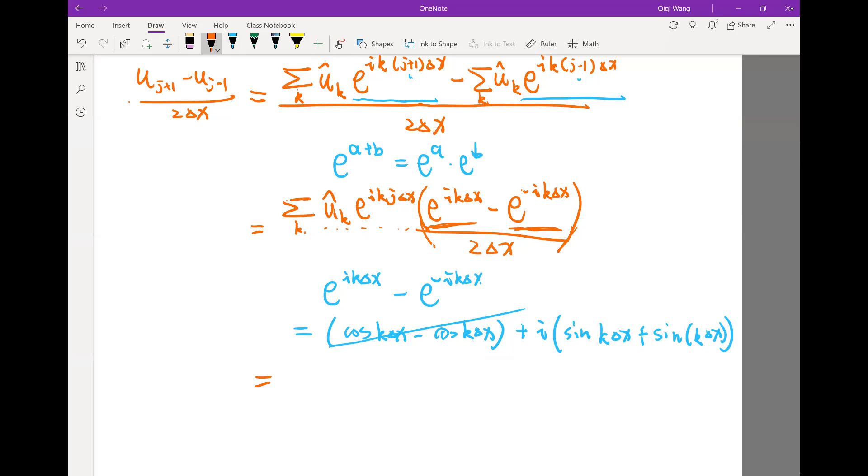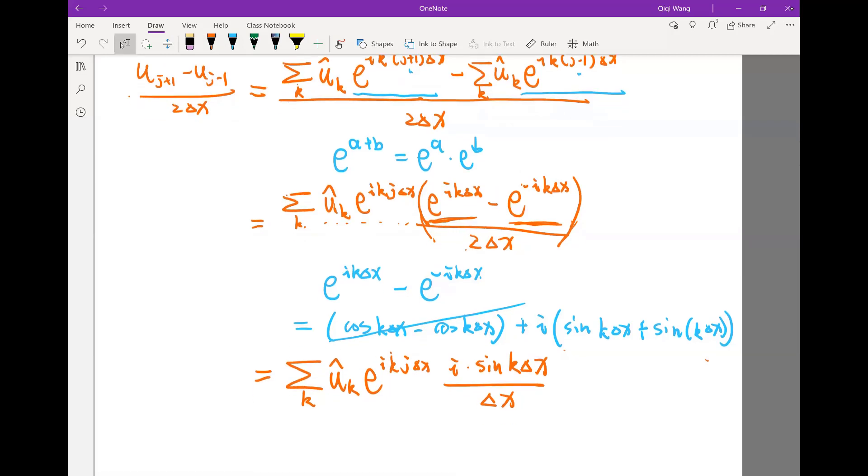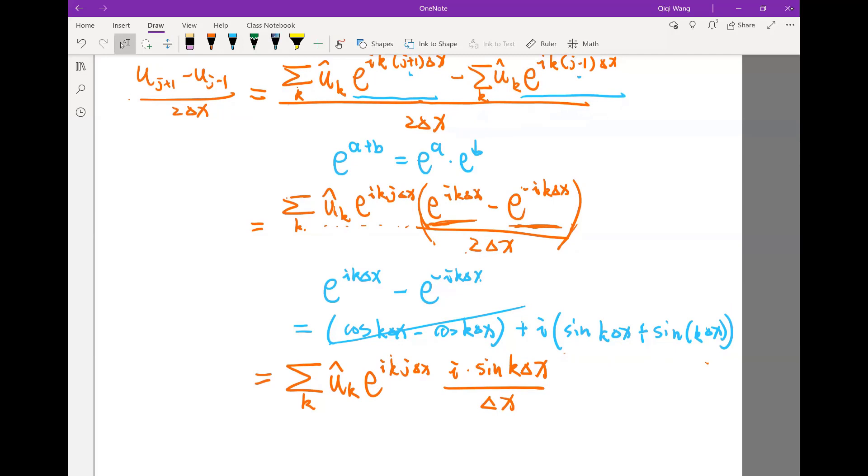So we plug this in into our original red formula. The finite difference can be represented as summation of exactly the same thing as we had before. But here, I have 2 cancels with these two. So I have delta x. I no longer have 2. And I have i times sine of k delta x. I think we have simplified to the simplest of what we can simplify. Well, I think we can still simplify a little bit.